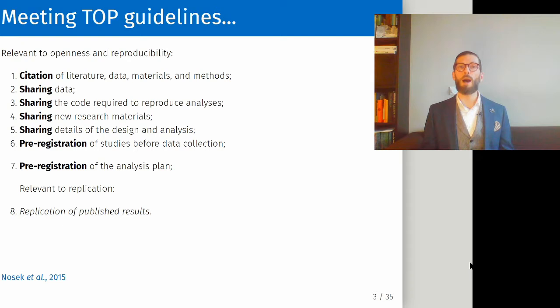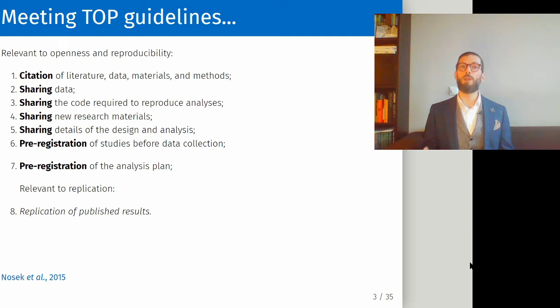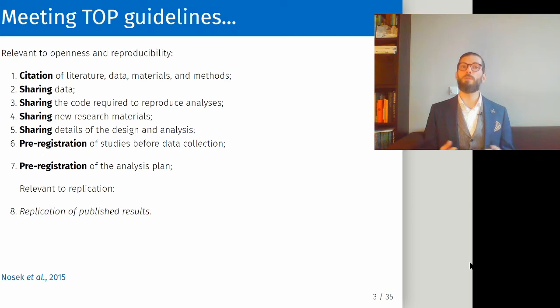The workflow I'm introducing today is designed to meet seven out of eight of the TOP guidelines. Those guidelines are: one, comprehensive citation of all literature, data, materials, and methods your study builds upon; two, sharing your original data if possible; three, sharing the code required to reproduce analyses — the code necessary to get from your data to your published results; four, sharing newly developed research materials if applicable; five, sharing the details of the design of your study and the analysis; six, pre-registering studies before data collection, which is primarily relevant when you intend to test hypotheses; and seven, pre-registering the analysis plan, which can be as detailed as pre-registering the entire analysis code before even collecting the data.